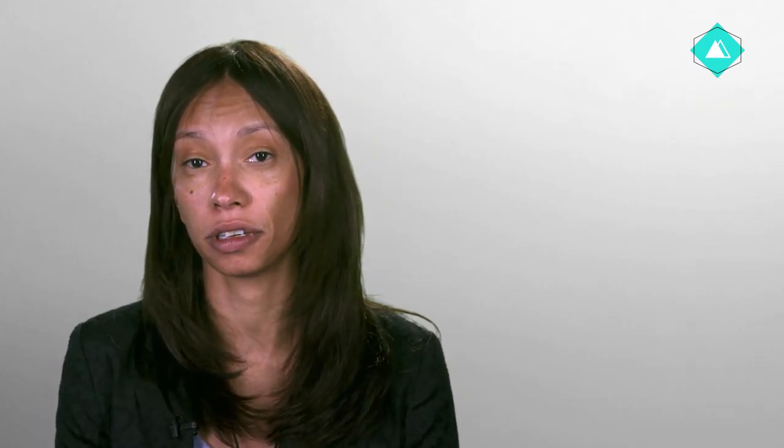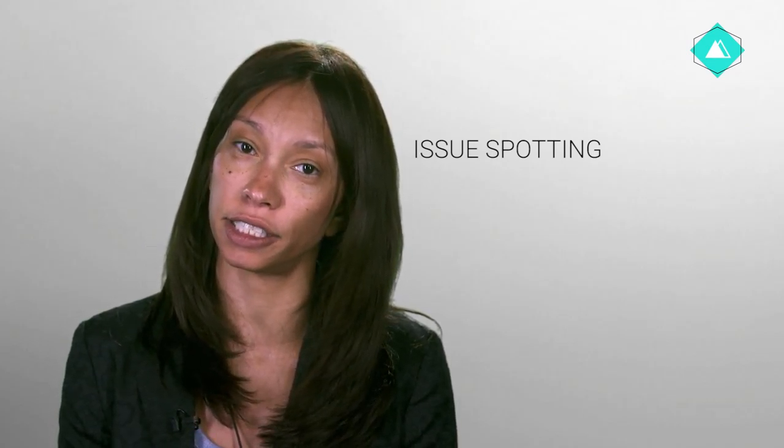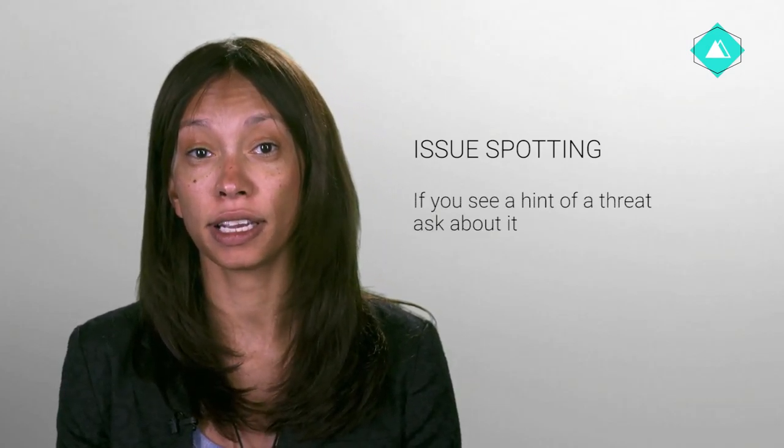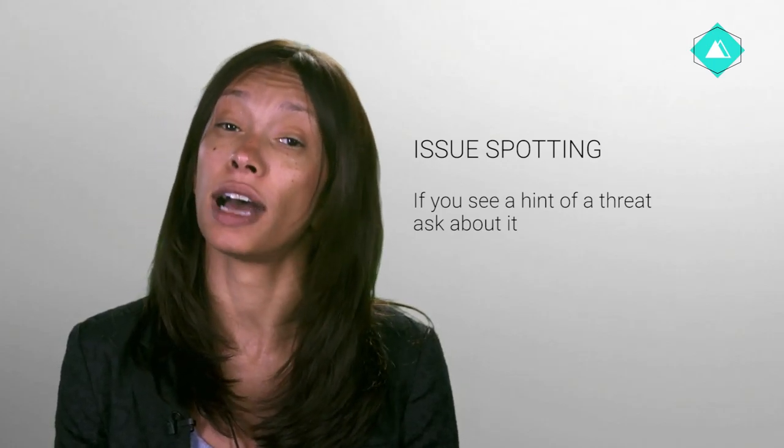Now remember, one of our key skills is issue spotting. If a witness provides a detail that seems to uncover another human rights violation, make sure you get all the relevant information. For example, threats can be a form of psychological torture. If you see a hint of a threat, ask about it. What happened with your wife? One day my interrogator told me that if I did not confess, they would arrest my wife. He said it was the judge's idea and that they would charge her with drug dealing. That's a capital offense. I started to cry and beg them to leave her alone. But they said they already had her in the next room and I heard her voice. So, I confessed.